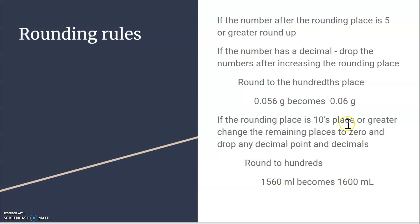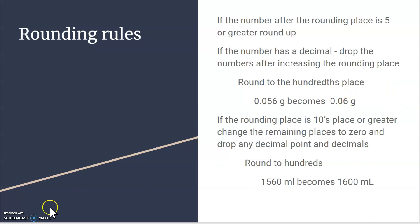It's very important that you don't add zeros to the number when rounding, because if I added a zero, I wouldn't be rounding to the hundreds place — I would be rounding to the thousands place.